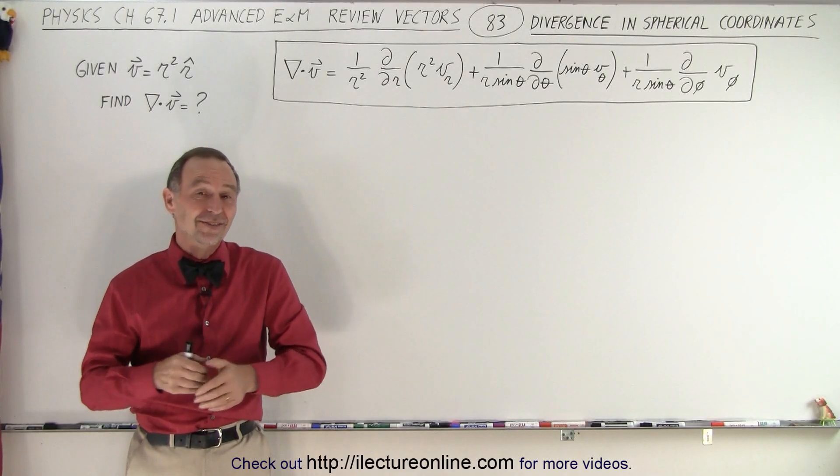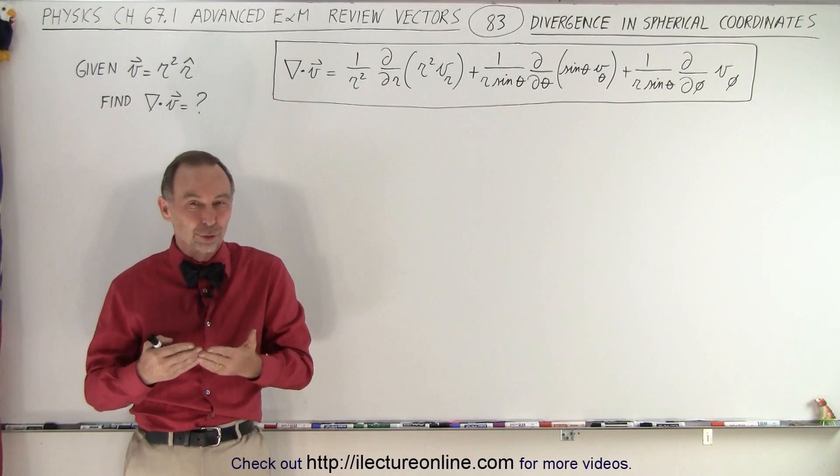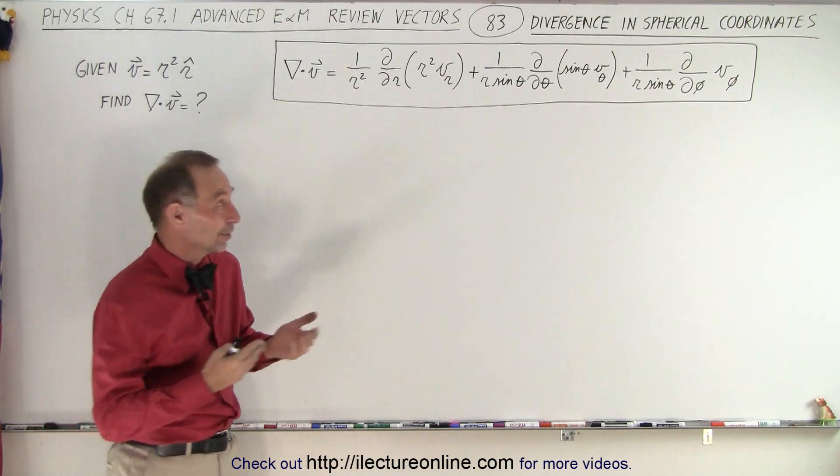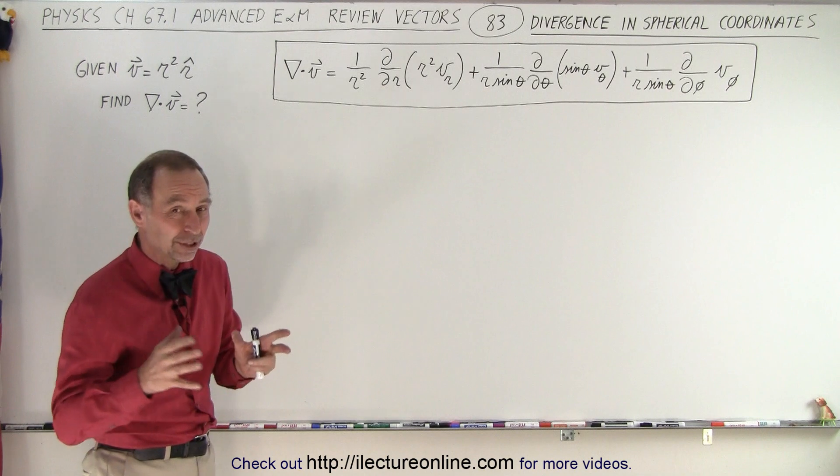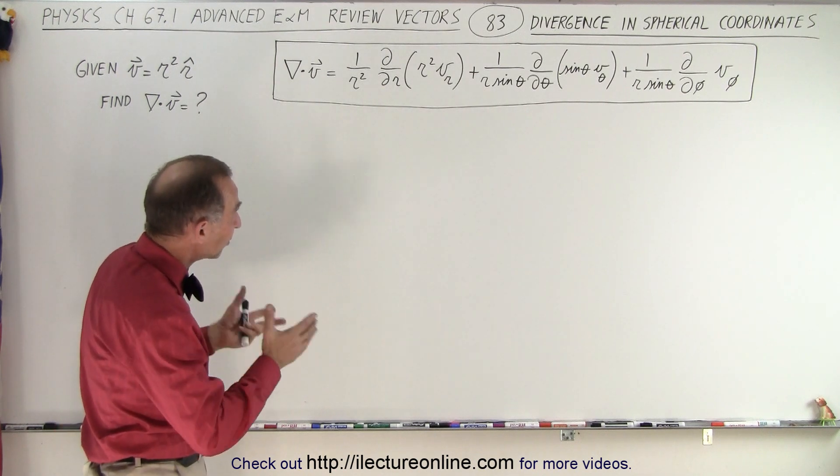Welcome to ElectronLine. Now let's take a look at the divergence of a vector or a vector field. Here it is in spherical coordinates. It looks quite complicated, but when you take a look at each term separately, it's not so bad.